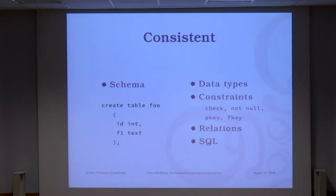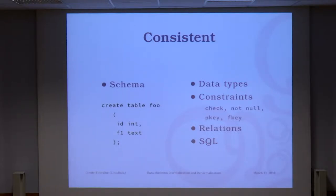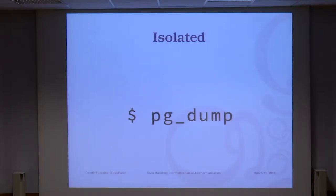If you are managing a stock system, one customer can buy the last item, but not two of them, because there is only one. For each individual, it's easy to be consistent. But to have a view of the whole system, it's going to be the database management system that handles that. The I in ACID is for isolation.